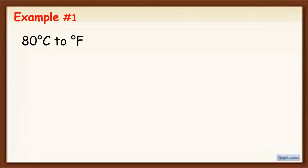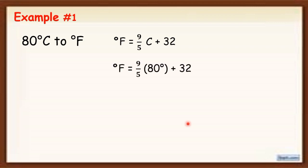To understand it further, let's have Example 1. Let us convert 80 degrees Celsius to Fahrenheit. Since we are looking for Fahrenheit, we use the formula F = 9/5 × C + 32. We substitute the value of Celsius, which is 80, so it becomes F = 9/5 × 80 + 32. Simplifying: 9 × 80 = 720, so we have 720/5 + 32.